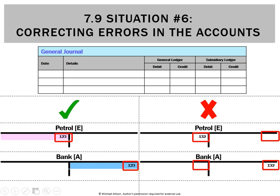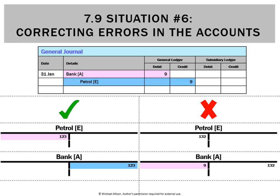Starting with our debit, we'll do a debit into bank of $9 — that'll get bank down to a credit balance of $123. Then we'll do a credit to petrol of $9, and that'll get petrol to the right amount as well. We do a narration with our memo number, and that's the correction of another mistake.